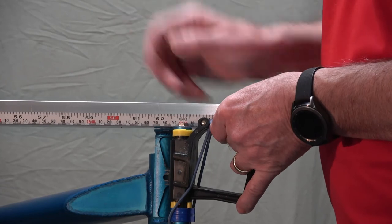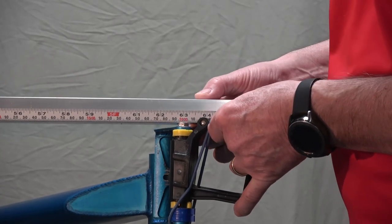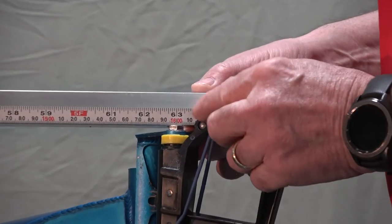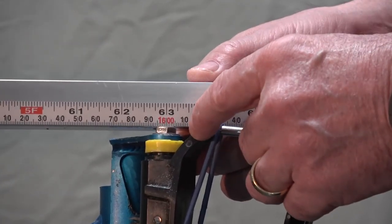So now that we've set zero on one side to the boat, we can come and check the span on the other side, and we can see here that the center line of the pin is at 160 centimeters.